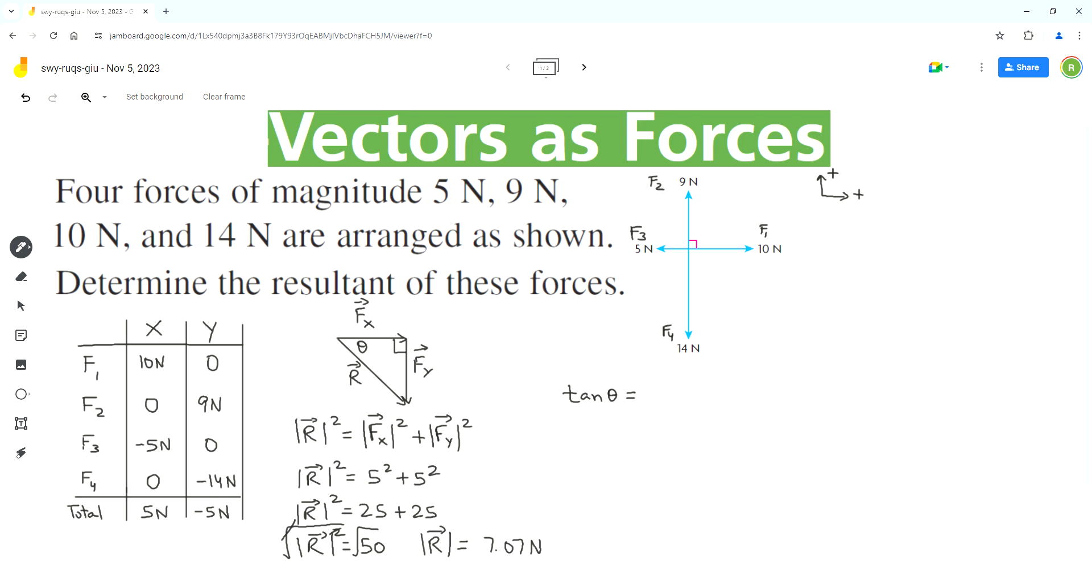The formula for tan is opposite over adjacent, so we have to use the magnitude of Fy and magnitude of Fx. Now we can do the inverse of tan.